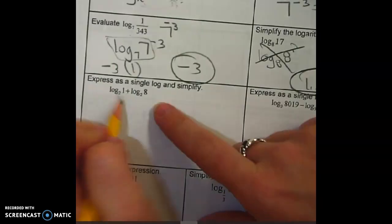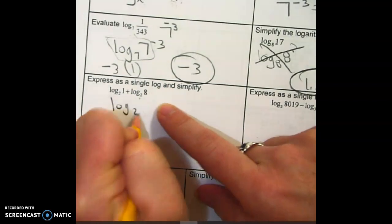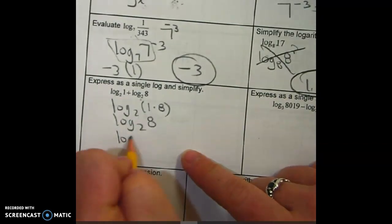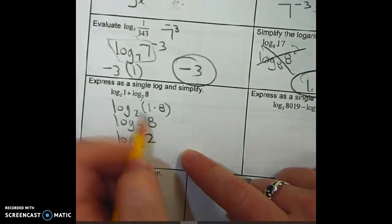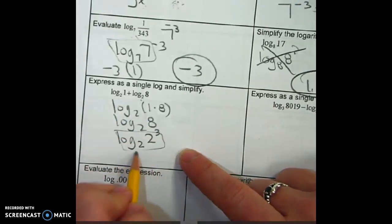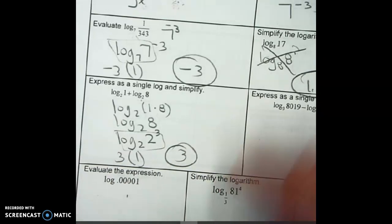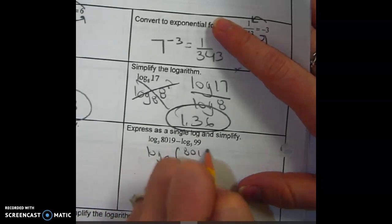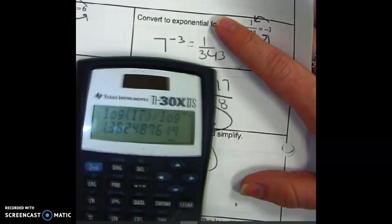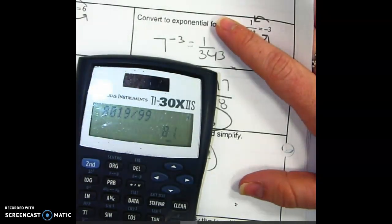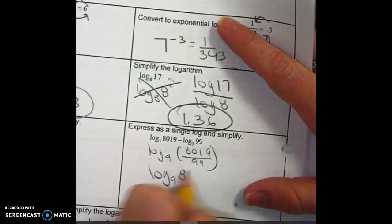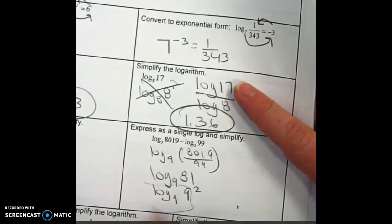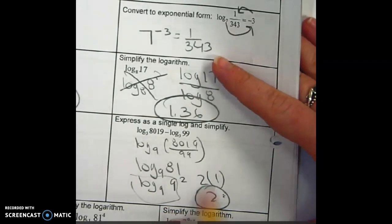All right, express it as a single log, and simplify. Well, when I have two logs, I need to make it 1. When I'm adding, it means multiply. Now that I have one log, I simplify it. If that's 2, that's got to be 2. 2 to the what power is 8 cubed. This turns into 1, little turns big. Done. All right. When it's subtraction, subtraction means divide. 8, 0, 1, 9. Divide by 99. Do you need to show your work? Yeah. Otherwise, I don't know how you got the answer. Log 9, 81. Now it's log 9. Since that's a 9, that has to be a 9 squared. That turns into a 1, little turns big, and we're done.